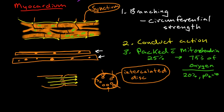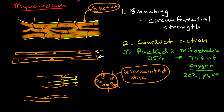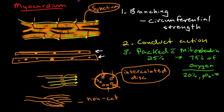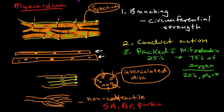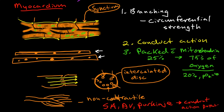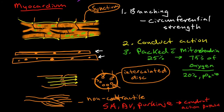Some myocardial cells have no actin or myosin and tend to look very pale. They have the same branching structure and intercalated disks but no ability to contract. These non-contractile cells make up the SA node, the AV node, and the Purkinje fibers of the heart. They cannot contract but they can conduct action potentials.